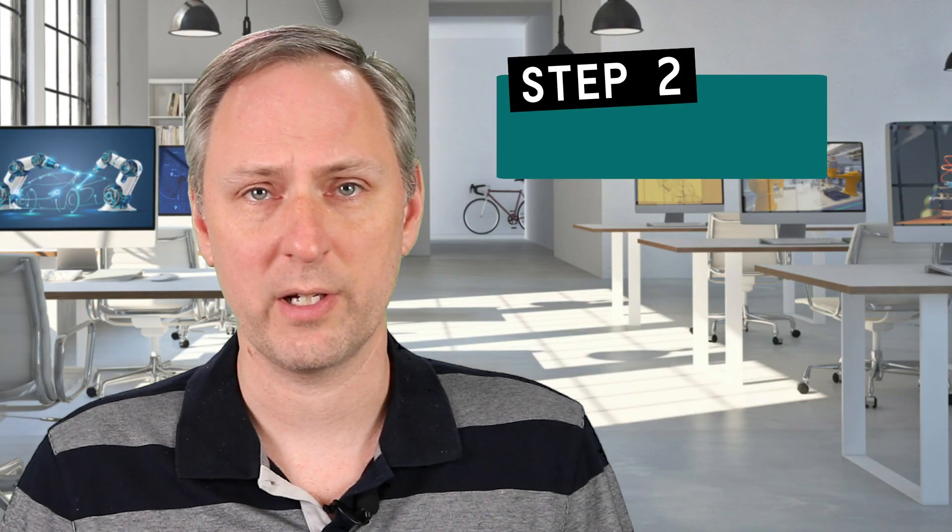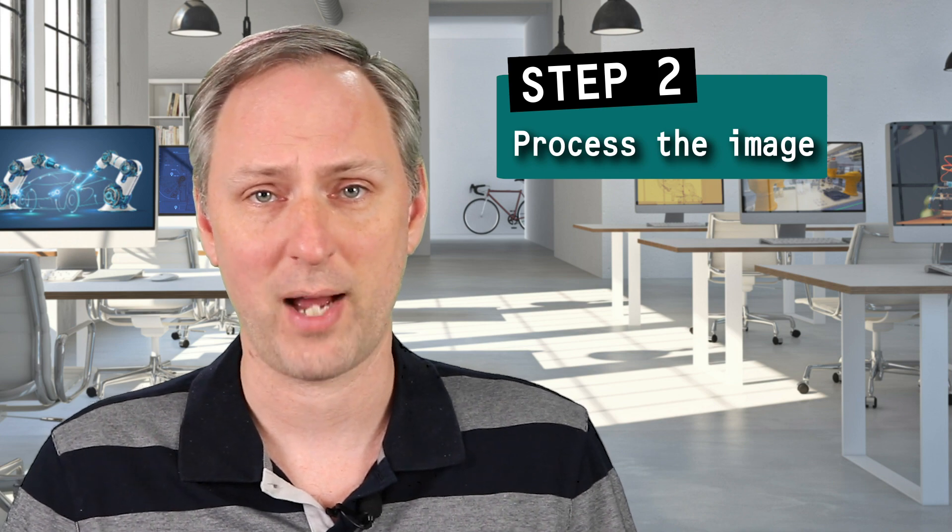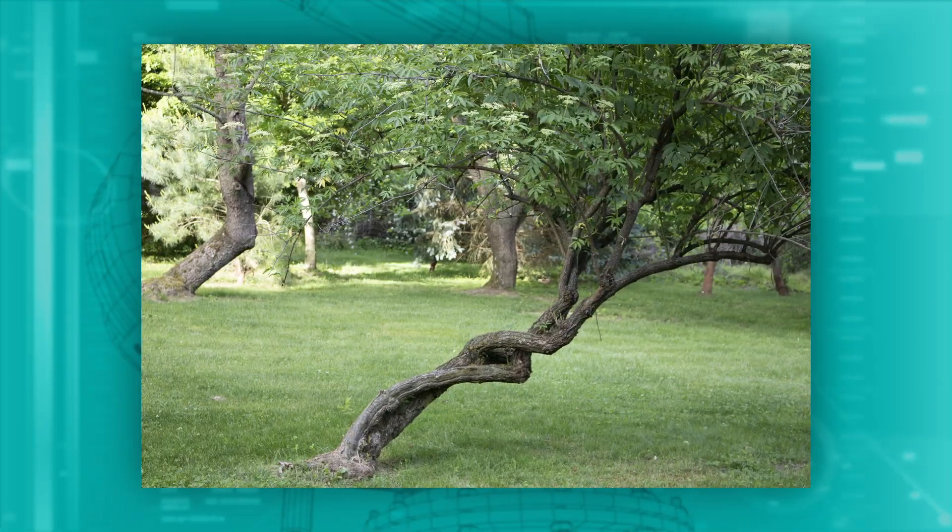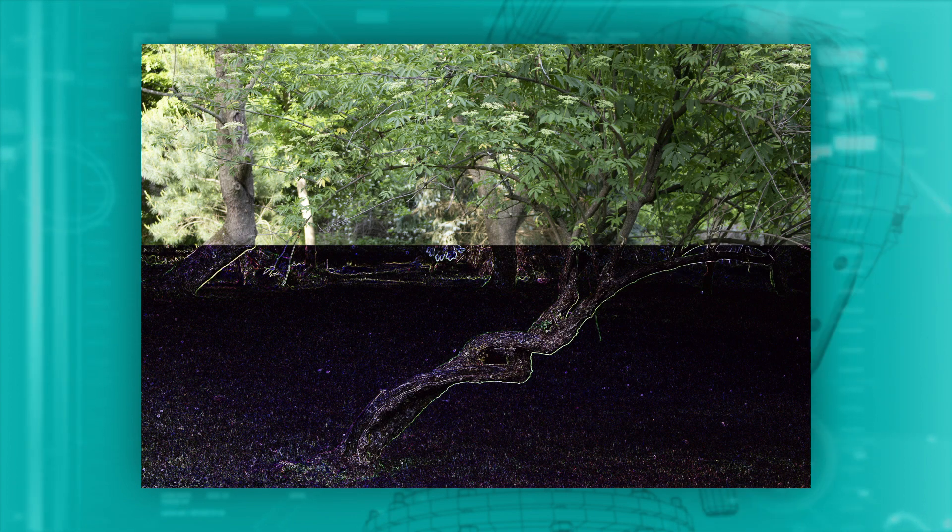Now that we have our image of the tree, we need to figure out what to do with it. The next step is the image processing step. This step takes a raw image and finds interesting parts. We can find edges or corners of objects, for example.